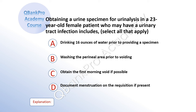Obtaining a urine specimen for urinalysis in a 23-year-old female who may have a urinary tract infection includes. Select all that apply. A: drinking 16 ounces of water prior to providing a specimen. B: washing the perineal area prior to voiding. C: obtain the first morning void if possible. D: document menstruation on the requisition if present.